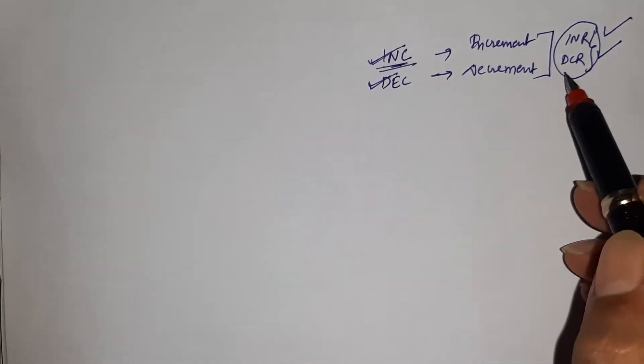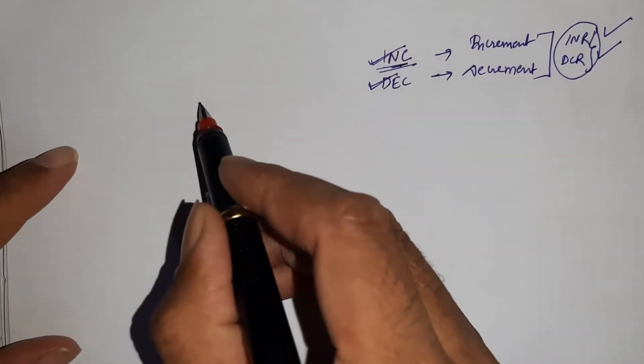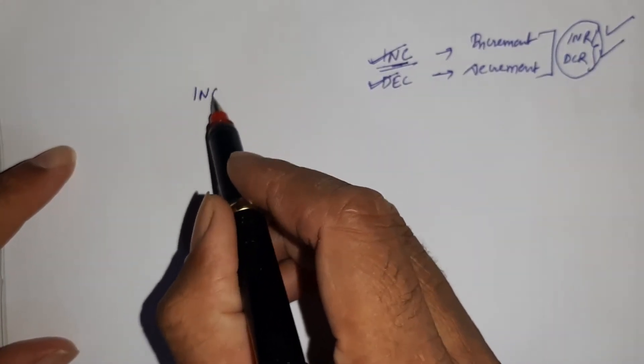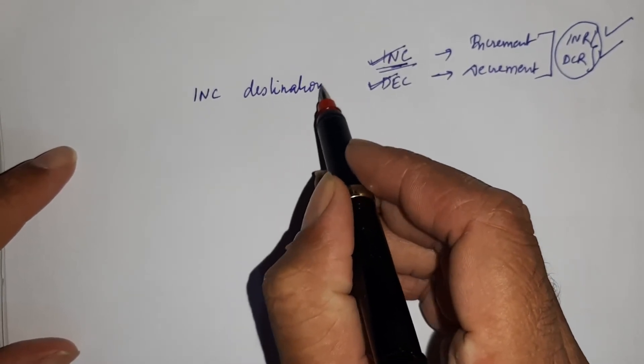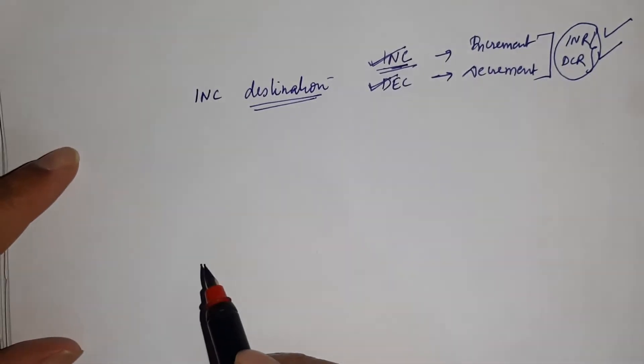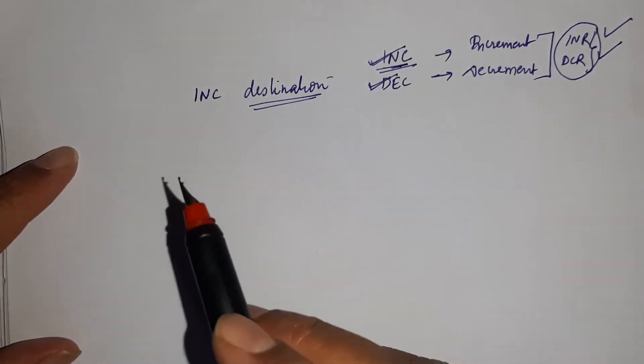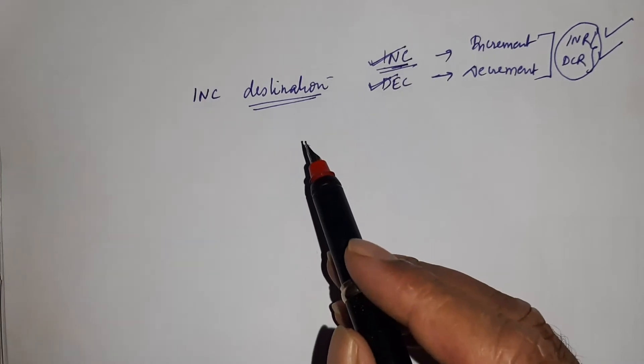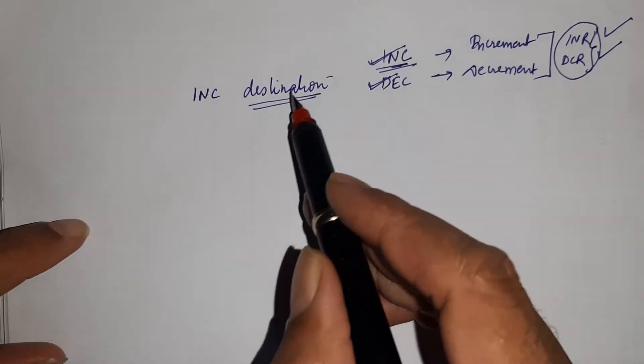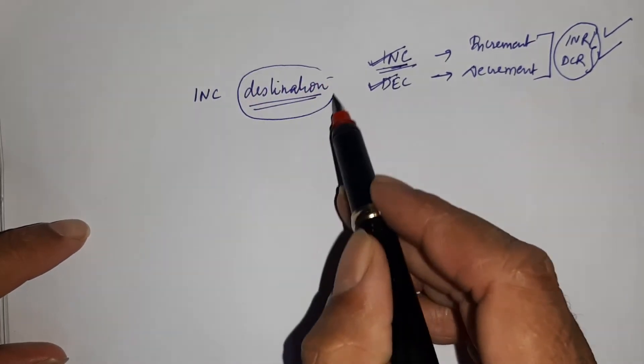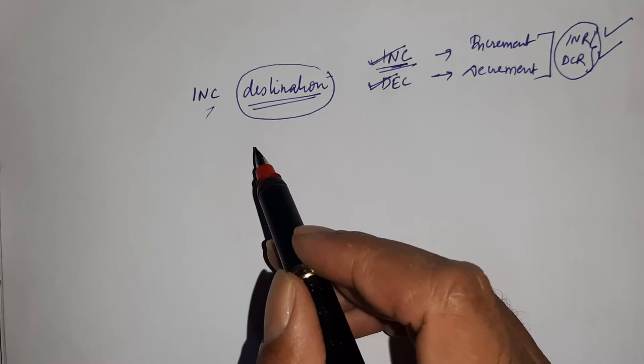What is the standard format of INC? That is INC destination. Destination can be a register or memory. Basically, what happens is the INC instruction adds one to the specified register or to the memory location. Whatever register or memory you have given, it will increment the content of that particular register and store the output within the destination.